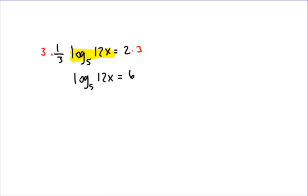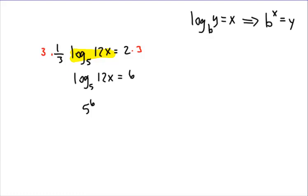Remember that if you have a log base b of y equals x, that's the same thing as b to the x equals y. A logarithm is equal to its exponent. So this is going to be 5 to the 6th equals 12x. You just need to punch in what 5 to the 6th is on your calculator — that's 15,625. Then to get x all by itself, you divide by 12.